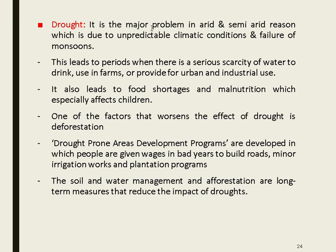Drought is a major problem in arid and semi-arid regions, caused by unpredictable climatic conditions and monsoon failure. Effects include serious scarcity of water for farms, food shortages, and malnutrition in children. Deforestation worsens drought. Drought-prone area development programs provide wages to build roads, minor irrigation works, and plantation programs. Soil and water management and afforestation are long-term measures to reduce drought impact.